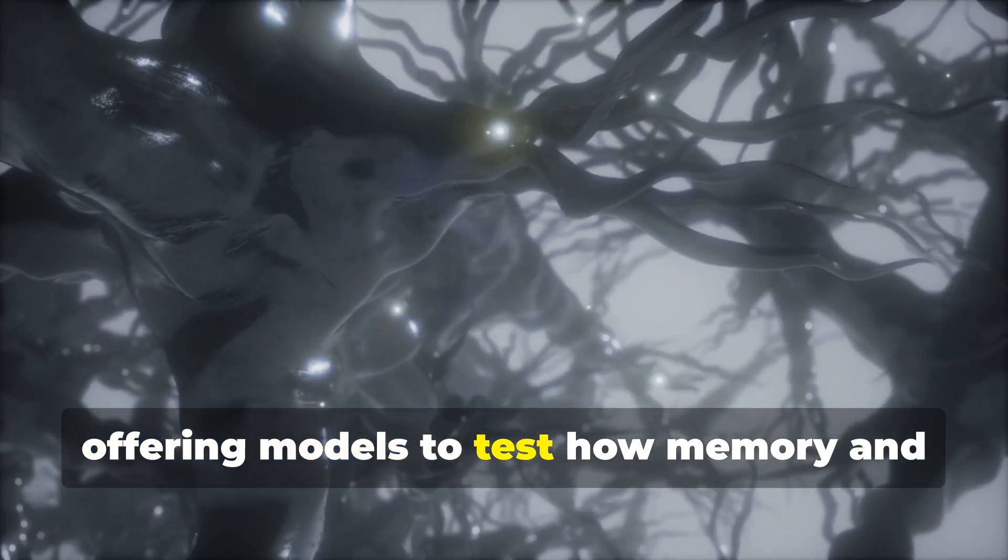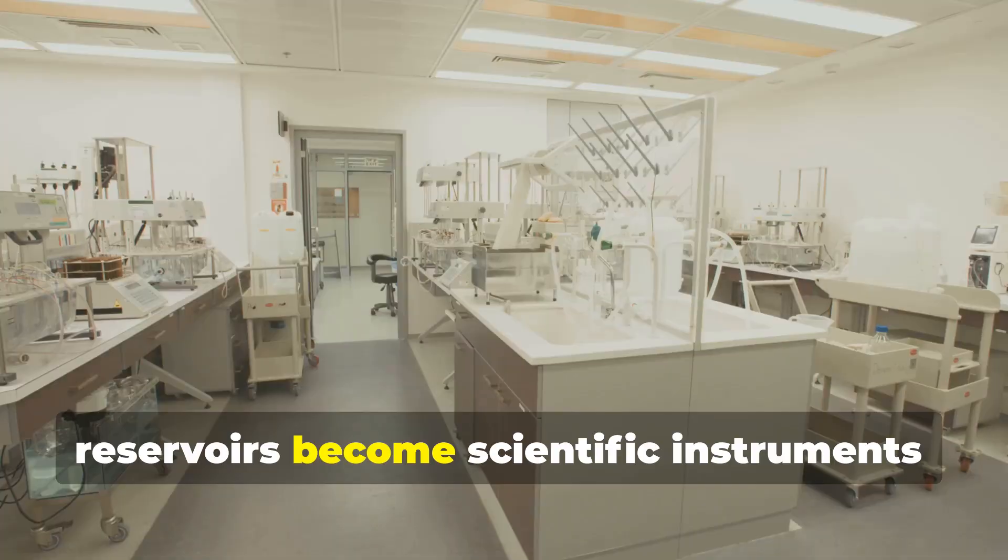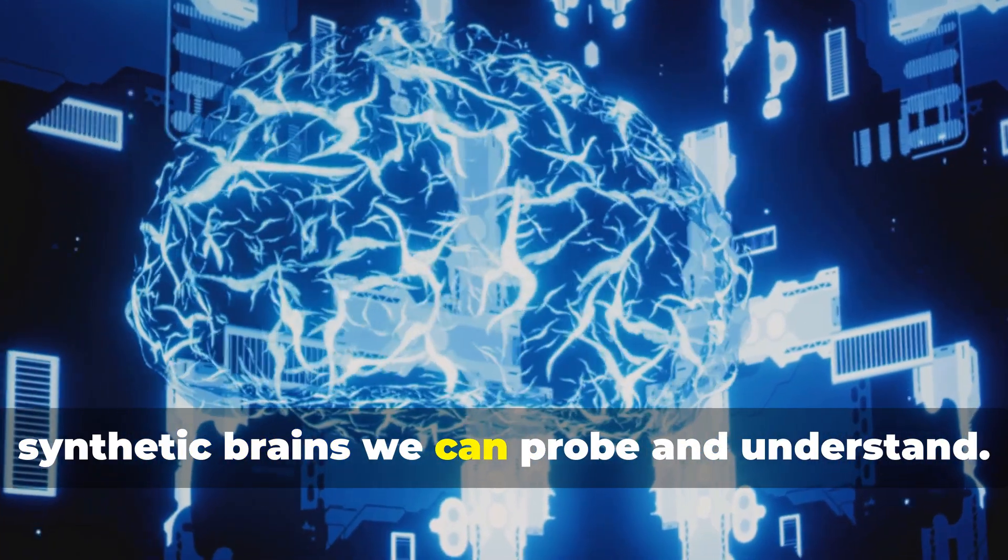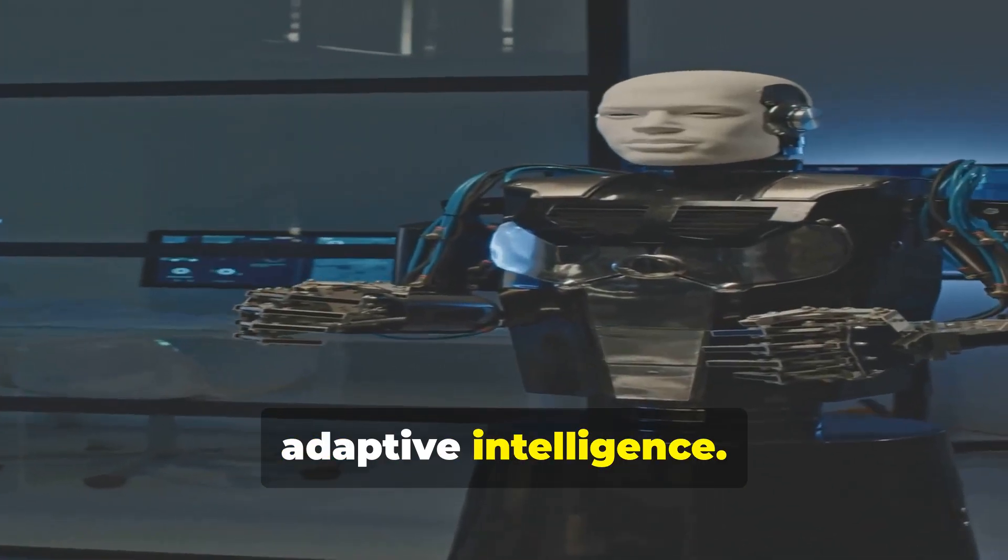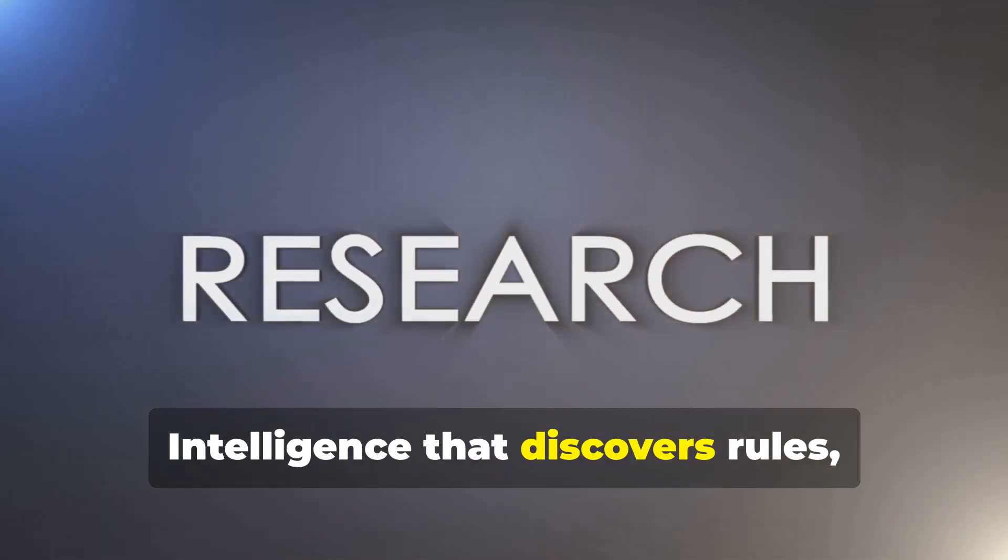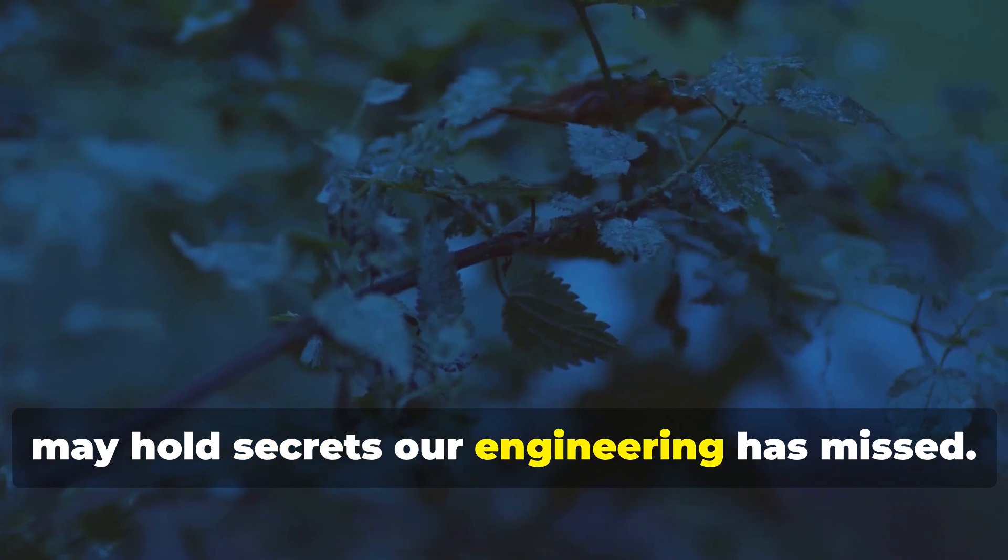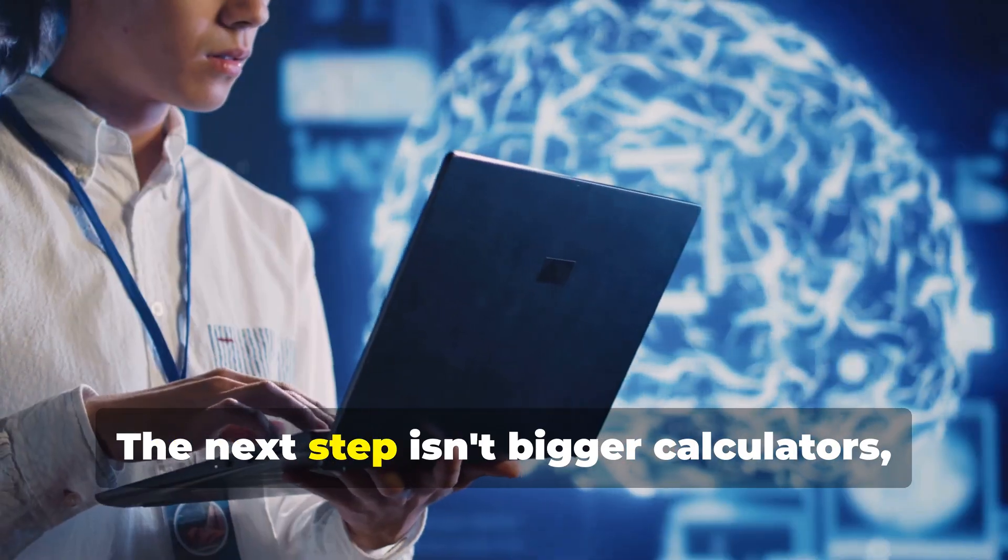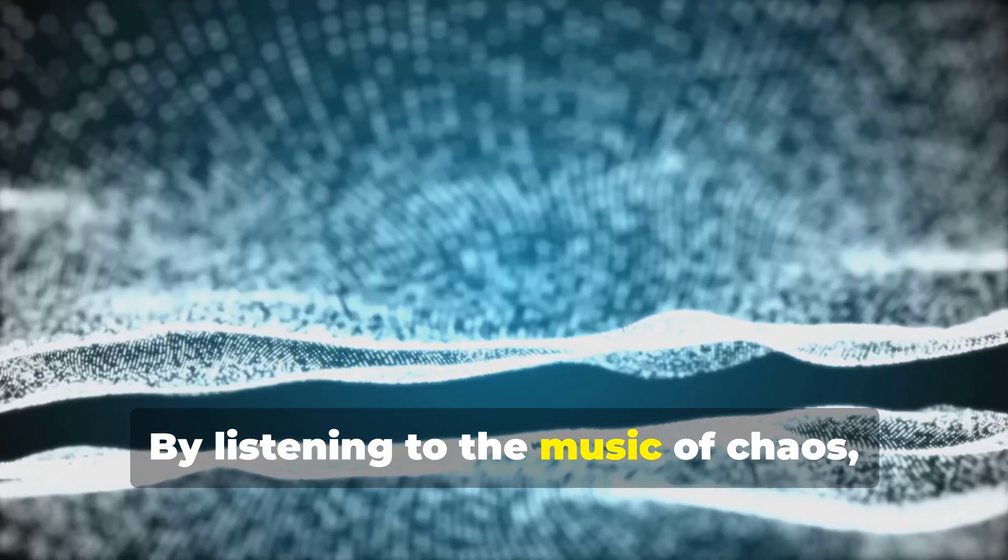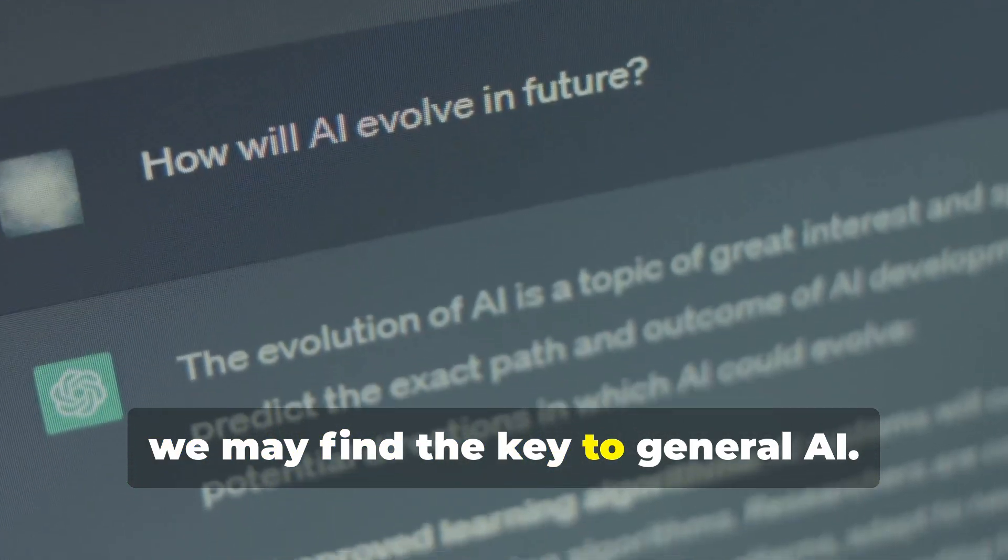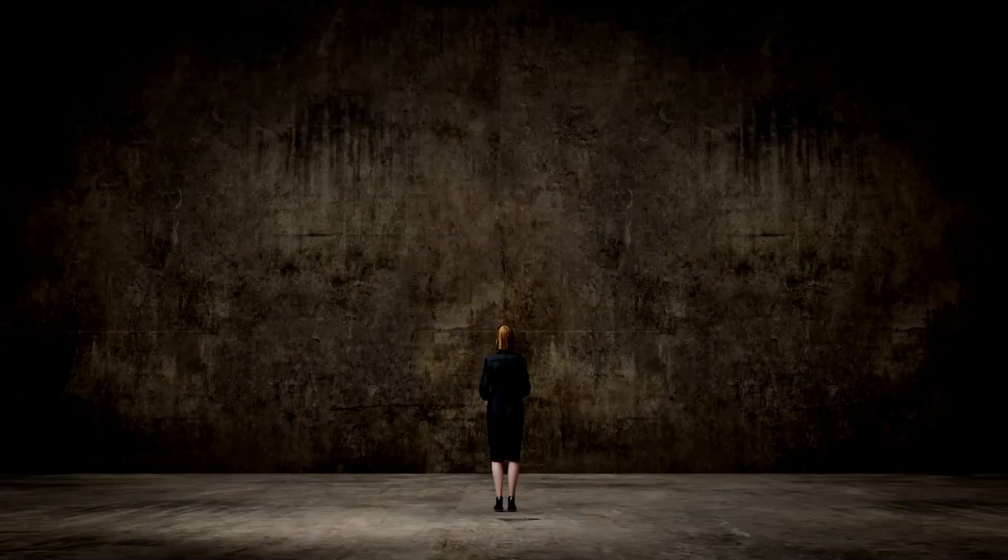This approach could unlock new insights into the brain itself, offering models to test how memory and efficiency emerge. Liquid state machines and other reservoirs become scientific instruments—synthetic brains we can probe and understand. Letting go of perfect control may bring us closer to true adaptive intelligence that discovers rules, not just follows them. By listening to the music of chaos, we may find the key to general AI.